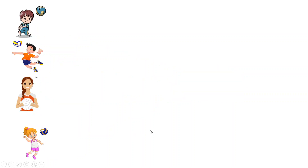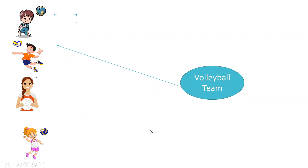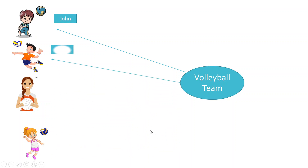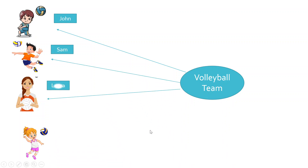Now let us assume that there is another team — the volleyball team — and here also we are having four players: John, Sam, Laura and Ditti. So this volleyball team also does not have its own identity. The performance of this volleyball team depends on the performance of these players.